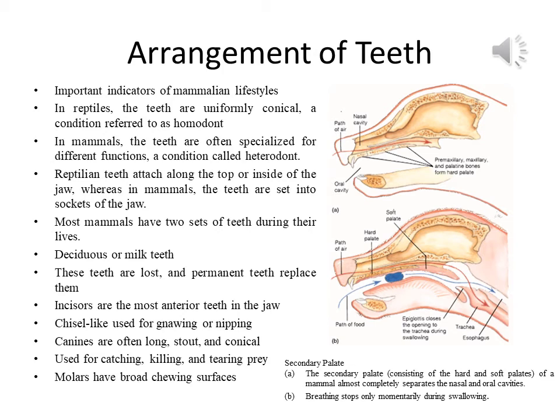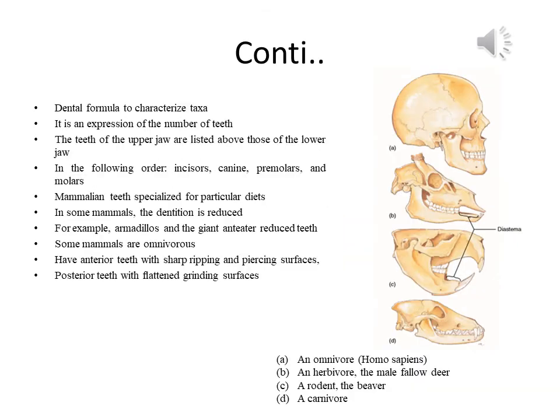The secondary palate consisting of the hard and soft palates of a mammal almost completely separates the nasal and oral cavity, with breathing stopped only momentarily during swallowing. Mammalian species have a characteristic number of each kind of adult tooth. Zoologists use a dental formula to characterize taxa — it is an expression of the number of teeth of each kind in one half of the upper and lower jaws, listed in order: incisors, canines, premolars and molars.